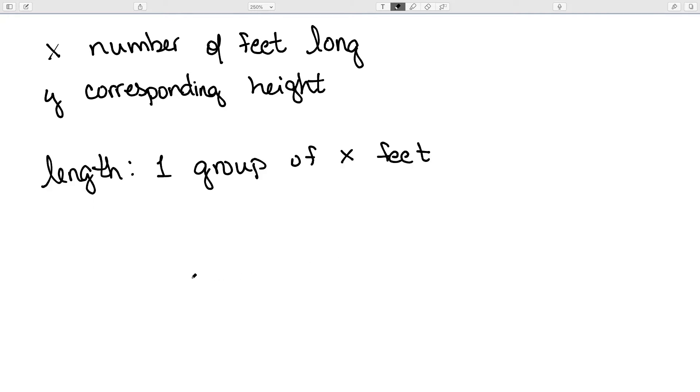So, as an example, let's let x be an arbitrary number that represents the number of feet long a given ramp is. Then we'll let y be the corresponding height of the ramp in feet. So, the way we're actually viewing it, in this case, if we view the length as one group of x feet, then our height is going to be 2/7ths of a group.